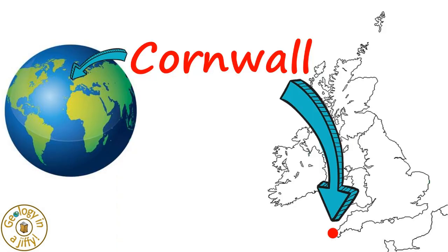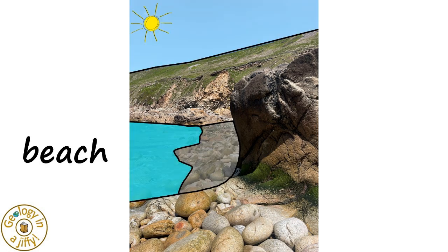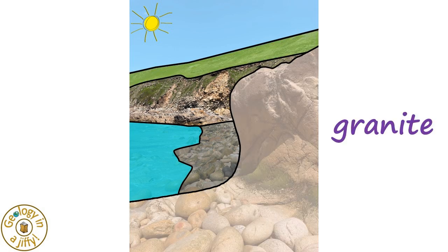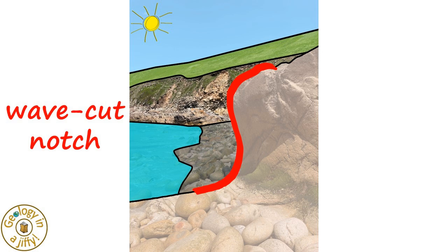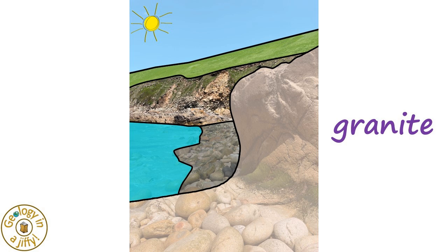In Cornwall in southwest England is the stunning cove of Porthnanven. We see the low-tide exposed beach, covered in rounded pebbles and boulders made from 270-million-year-old Lands End granite. This outcrop shows a wave-cut notch formed by the waves of the Atlantic Ocean that pound the coastline here.